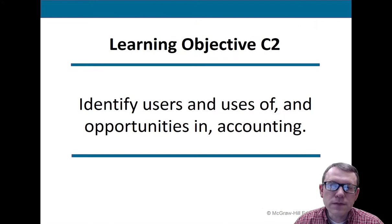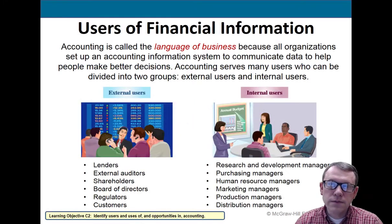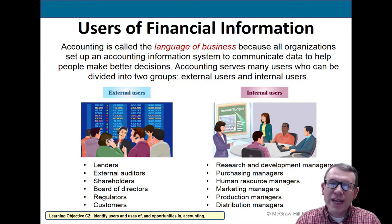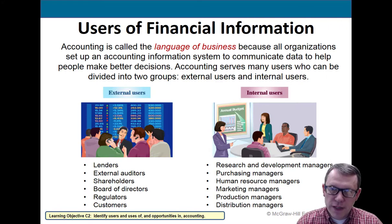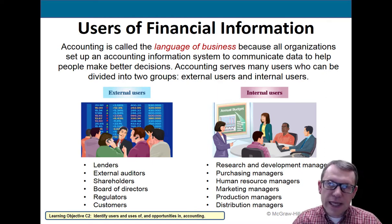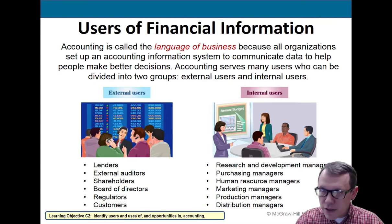Learning objective number two: identify users and uses of, and opportunities in, accounting. This first course you're going to be taking is BA 211, Introduction to Financial Accounting. We're going to talk mainly about financial accounting, which focuses on external users. Internal users are mostly covered in the next section — managerial accounting — in BA 213. Accounting is the language of business.